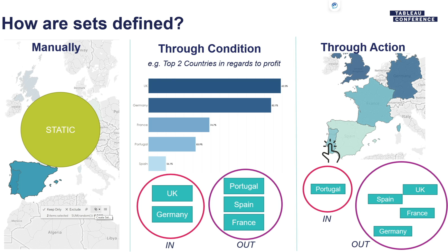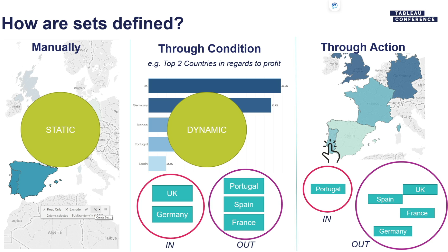When you define sets in different ways, they also have different properties. If you define a set manually, it will mostly be static — until you actually go in and edit the set, it won't change what's inside. If you do it through a condition, it's the exact opposite — it's fully dynamic. As new data is added, new values might change what's in and what's out, and the calculation will always be redone.